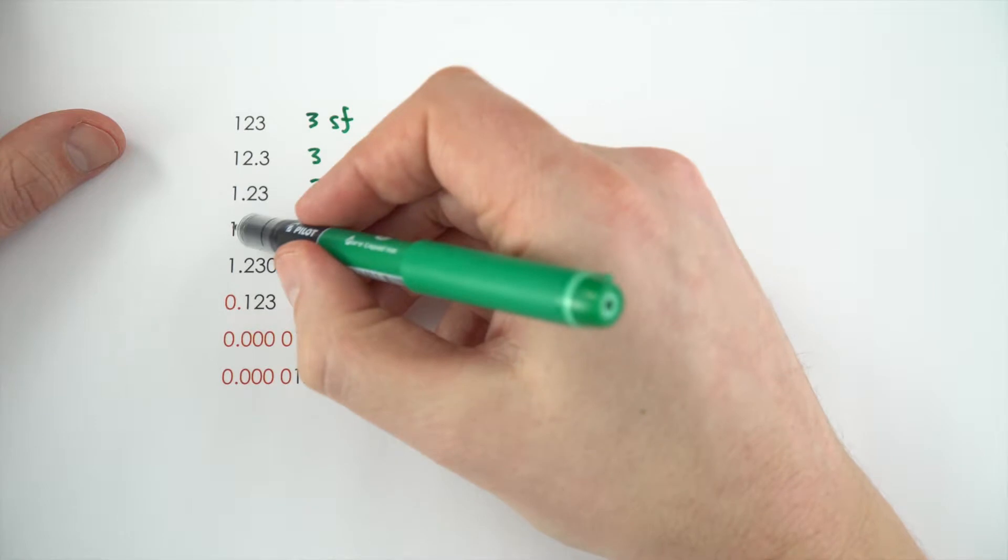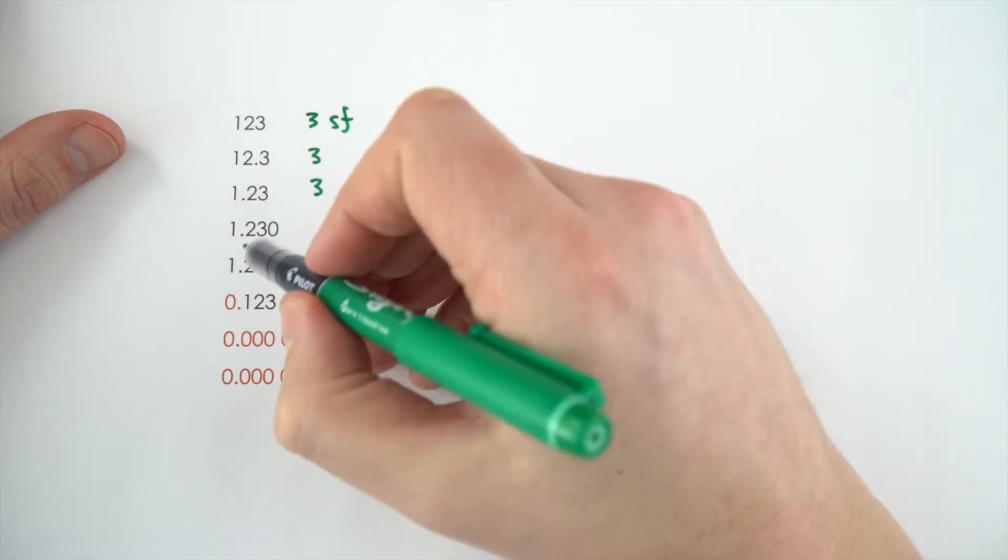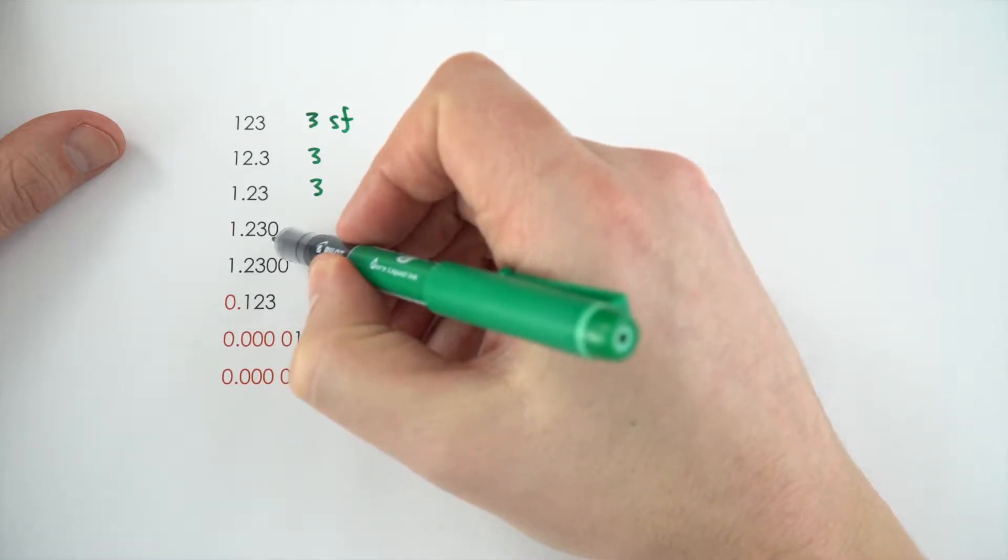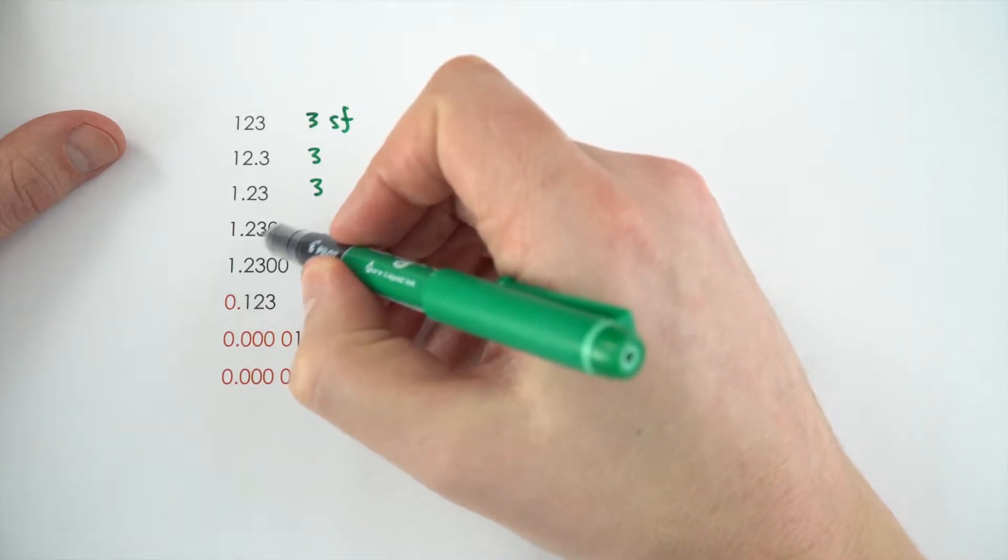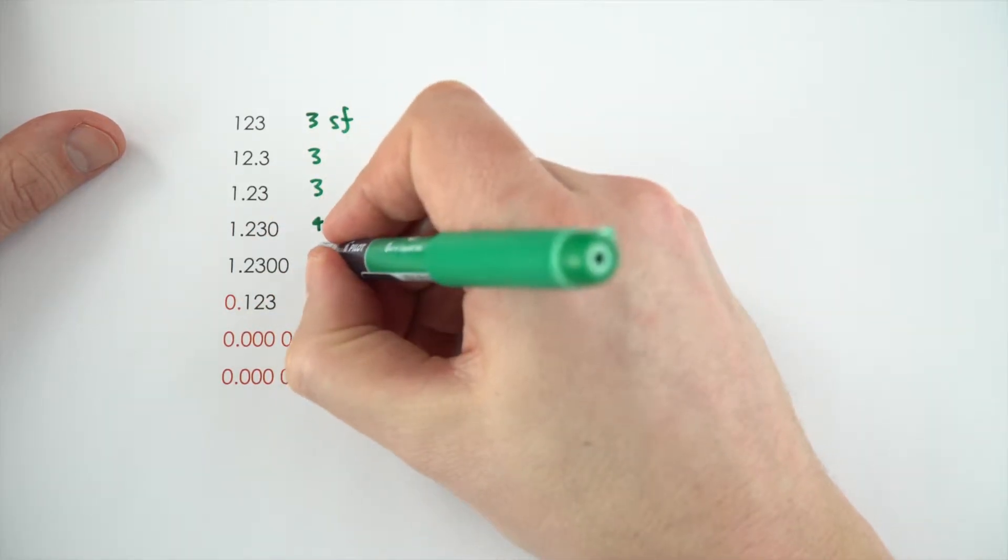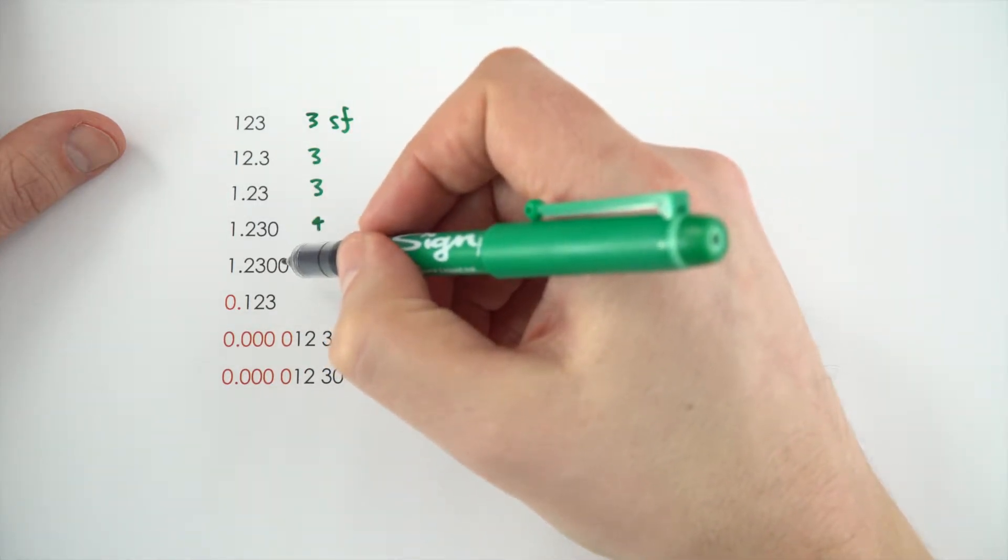Now, the one beneath it, 1.230, well, this is the same size as this one, but this has been quoted to an extra figure at the end. It happens to be a zero, but this zero adds to the significance. So, 1.230 is to four significant figures, and if we add another zero, it's to five. And this just means that we know the value of that number really precisely.